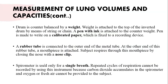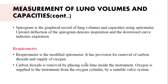The subject breathes through the mouthpiece while closing the nose with a nose clip, so breathing is done through the mouth only. Spirometry is used for only a single breath cycle, not repeated cycles, because carbon dioxide accumulates in the spirometer and fresh oxygen cannot be supplied to the patient. A spirogram is the graphical record of lung volumes and capacities; upward deflection denotes inspiration and downward curve indicates expiration. Respirometer is the modified form of spirometer, which provides for removal of carbon dioxide and also allows oxygen supply.